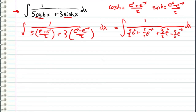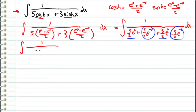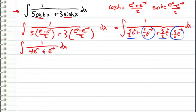Now we combine like terms. Five halves plus three halves is eight halves, which is four, so we get 4e^x. Then five halves minus three halves is one, so we get e^(-x). Now I'm going to divide the top and bottom of this fraction by e^(-x).